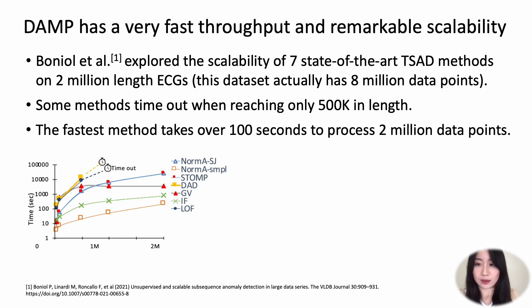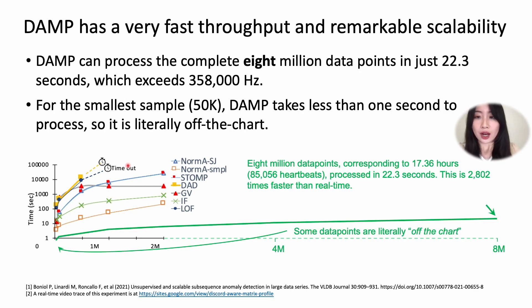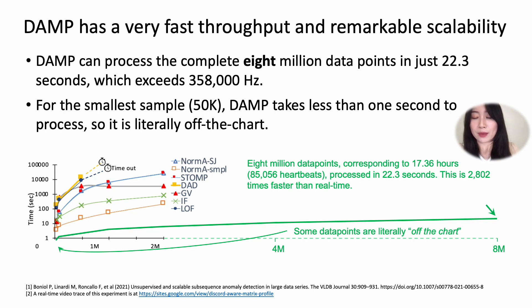Let's see how well DAMP does on the same dataset. We test DAMP with the full 8 million data points of the ECG data. As shown by the green curve, DAMP takes only about 23 seconds to process the complete 8 million data points. For smaller samples, DAMP is also fast — it is literally off the original chart. Compared to all other methods in this figure, we are between a thousand to a million times faster.